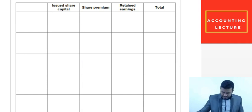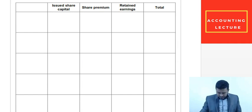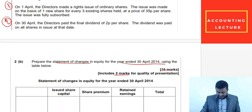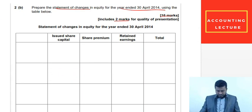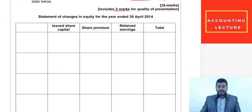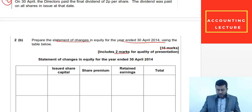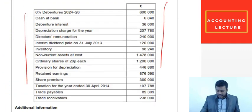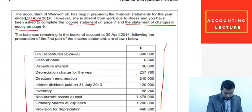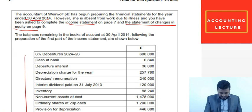Let me show you a proforma of the Statement of Changes in Equity. There are two types — I'd say this is the bigger type and there's a smaller type. Let's start with the small type of the Statement of Changes in Equity.